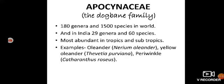Some common examples of Apocynaceae are: Nerium oleander (oleander), Thevetia peruviana (yellow oleander/yellow kaner), periwinkle — Catharanthus roseus, Plumeria (rangipani), and Rauwolfia serpentina, which is also a medicinal plant.